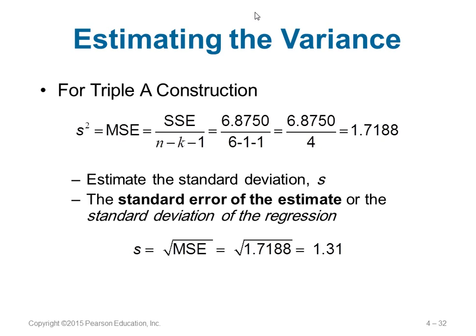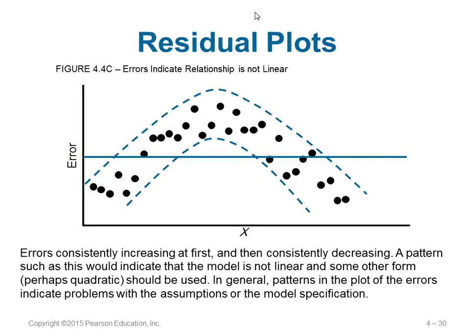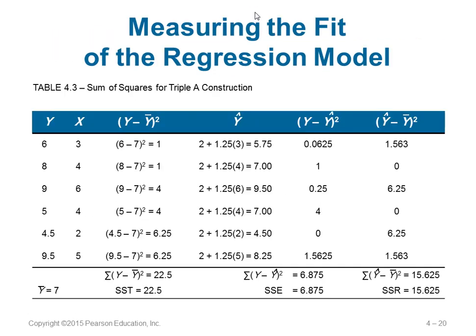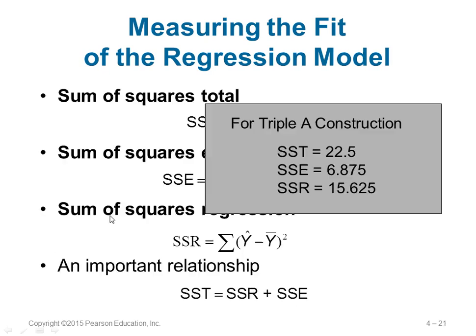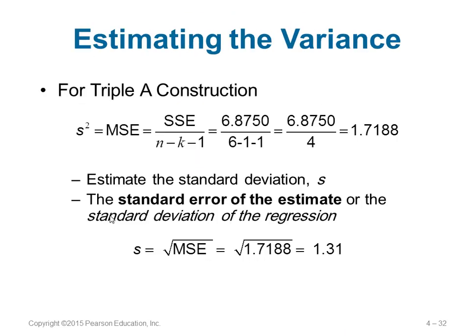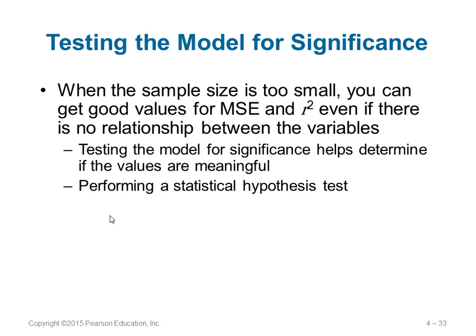Sometimes we can have a very small sample, and from it we might get a very good MSE and a good R², but maybe there is no real relationship at all. So we need to test the significance to verify whether the values we got are correct. This is done using a statistical hypothesis test. The general linear model is y = β0 + β1x + ε. If β1 = 0, that means there is no relation between x and y — no slope means no relation. This is the null hypothesis.